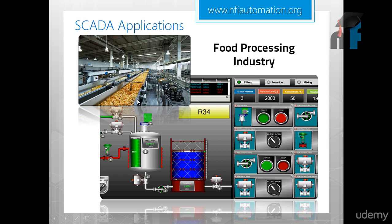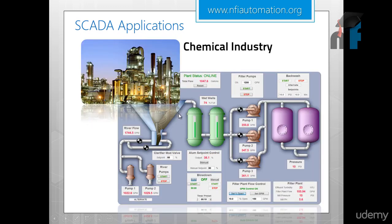Typical applications of SCADA include food processing — for example, a food conveyor line where a SCADA screen controls the opening and closing of valves, temperature, flow, and level. Another example is the chemical industry, where from the outside you see large tanks, and on the SCADA screen you can visually see the level, temperature, and flow of liquid inside the tanks.